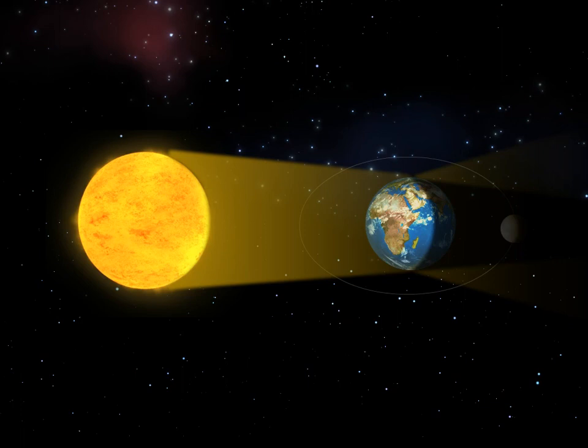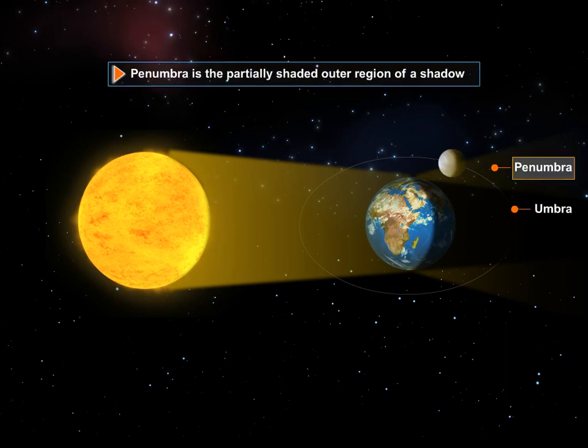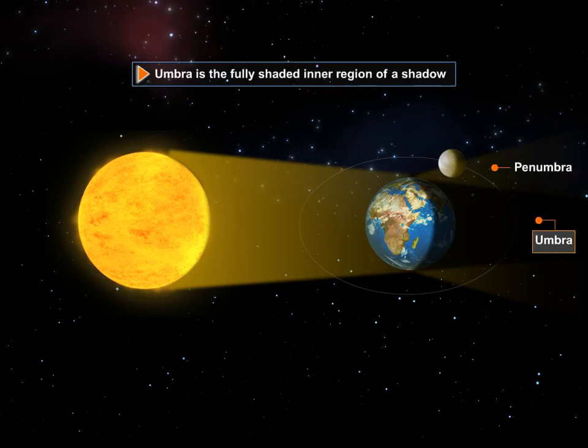When the earth's shadow covers the complete disk of the moon, the moon becomes invisible and it is a total lunar eclipse. Whereas, during a partial lunar eclipse, the shadow partially covers the disk of the moon.